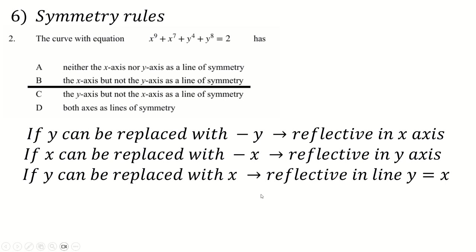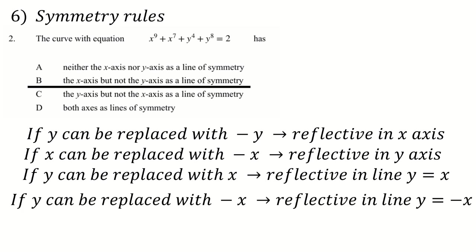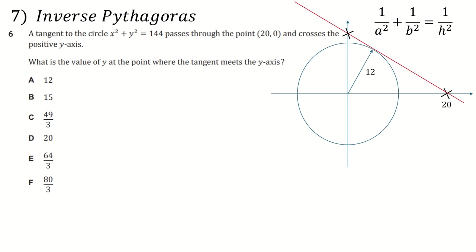The other two that you might want to know is if you can replace X with Y and vice versa. So if you can essentially swap the X's and the Y's over and it makes no difference, then your line is reflective in Y equals X. And if you can swap Y with minus X and vice versa, X with minus Y, then it's reflective in the line Y equals minus X. Realistically, those are probably the only ones that would ever be useful for you to know. And also realistically, they probably won't be that useful for you to know, but they could be, I guess.